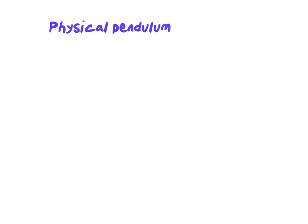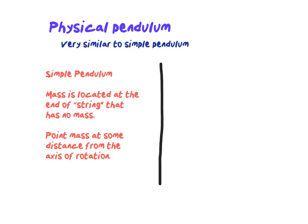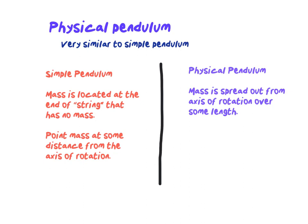This video is going to cover the physical pendulum, and right off the bat it's very similar to a simple pendulum. Remember the simple pendulum has a mass at the end of a negligible mass string that connects it to the axis of rotation. The physical pendulum's only difference is that the mass is distributed throughout from the axis of rotation to the bob at the end.